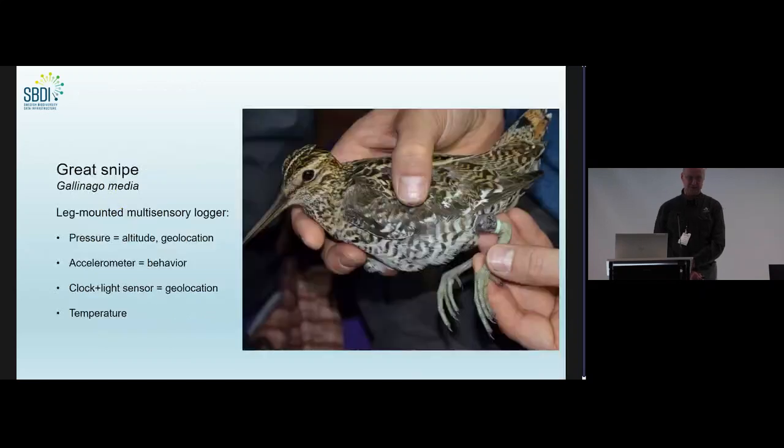And with this, it becomes kind of obvious that it can be tricky to do this in a relational database management system. Here, just a picture of another sensor that you see something else than just collars and moose. This is a multi-sensory logger on a great snipe, measuring pressure for altitude and geolocation, acceleration for behavior, clock and light sensor for geolocation and temperature.